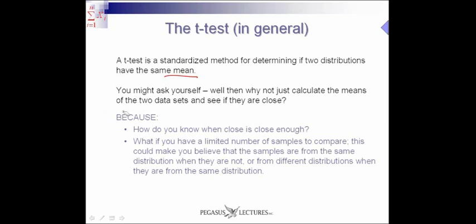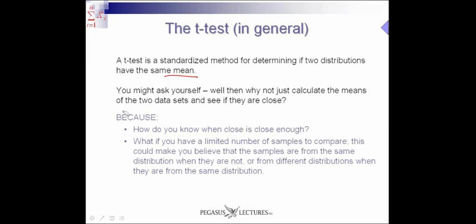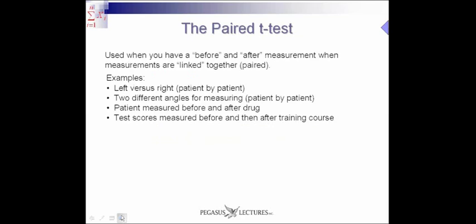How do you know when close is close enough? And the other problem: what if you have a limited number of samples to compare? This could make you believe that the samples are from the same distribution when they are not, or from different distributions when they really are from the same distribution. In those cases, you convince yourself of something that's not really true, not because the data really says it, but because you have an under-sampling of data. So we need a formalized method of determining whether or not we have the same mean, whether or not two distributions really are the same.